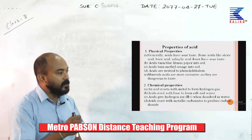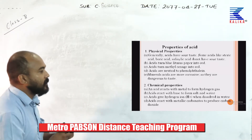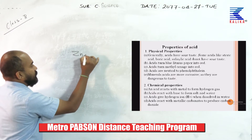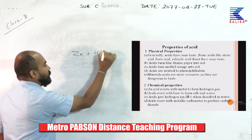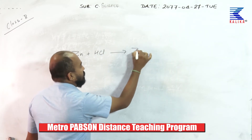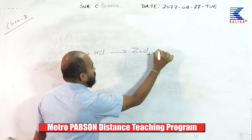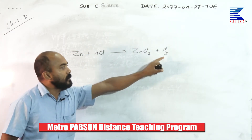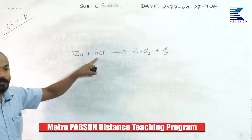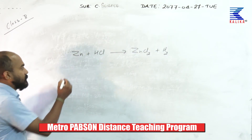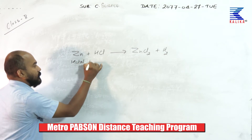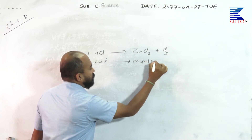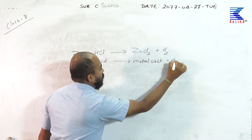The first chemical property is that acids react with metals to form hydrogen gas. For example, zinc (the metal) plus hydrochloric acid gives zinc chloride (the salt) and hydrogen gas as the product. That means hydrogen gas is displaced from the acid by the metal, so: metal + acid → metal salt + hydrogen gas.